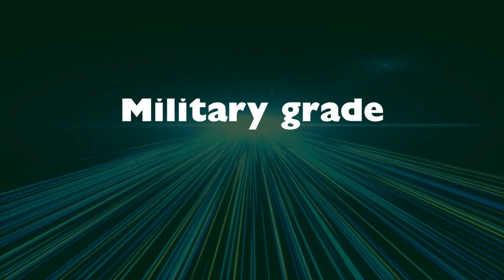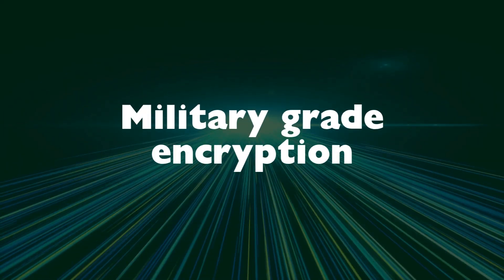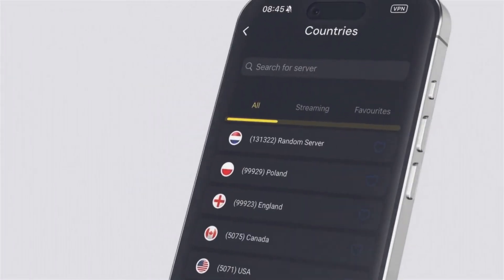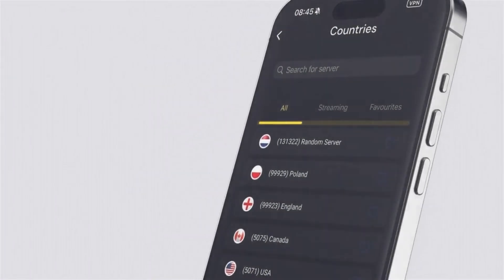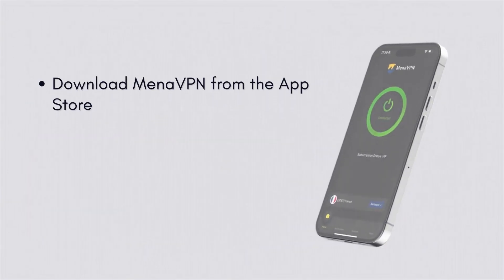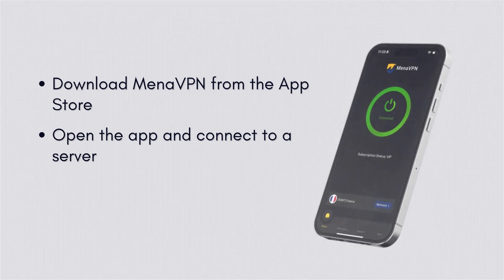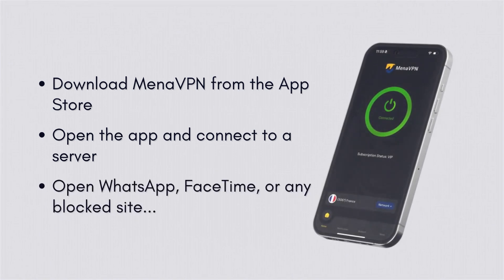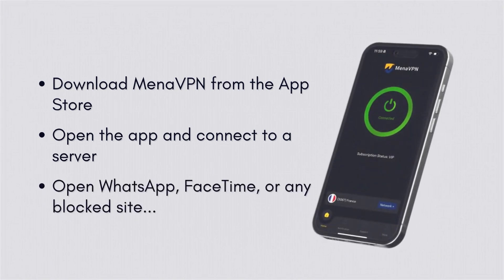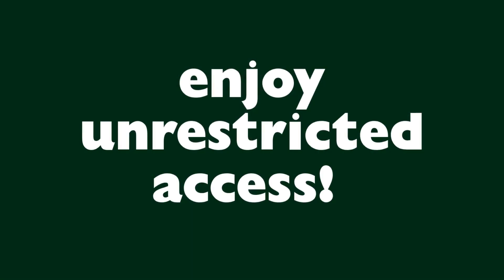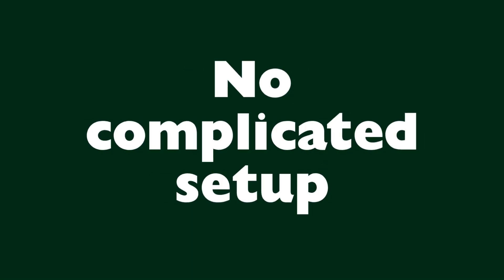With Mina VPN you get high-speed servers, military-grade encryption, and a strict no-log policy, all packed into a super easy-to-use iPhone app. Here's how to get started in under two minutes: download Mina VPN from the App Store, open the app and connect to a server, then open WhatsApp, FaceTime, or any blocked site and enjoy unrestricted access. No complicated setup, no technical skills needed.